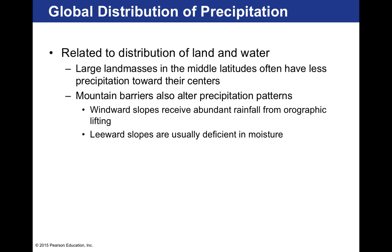Mountain barriers also alter precipitation patterns — westward slopes receive abundant rainfall, such as the Sierra Nevada mountains in California and areas to the west, which get a lot of rain certain times of year. Leeward slopes are usually deficient in moisture, such as the Rocky Mountains to the east, Denver, and the western plain states, which don't get much precipitation. That's because they're on leeward slopes.